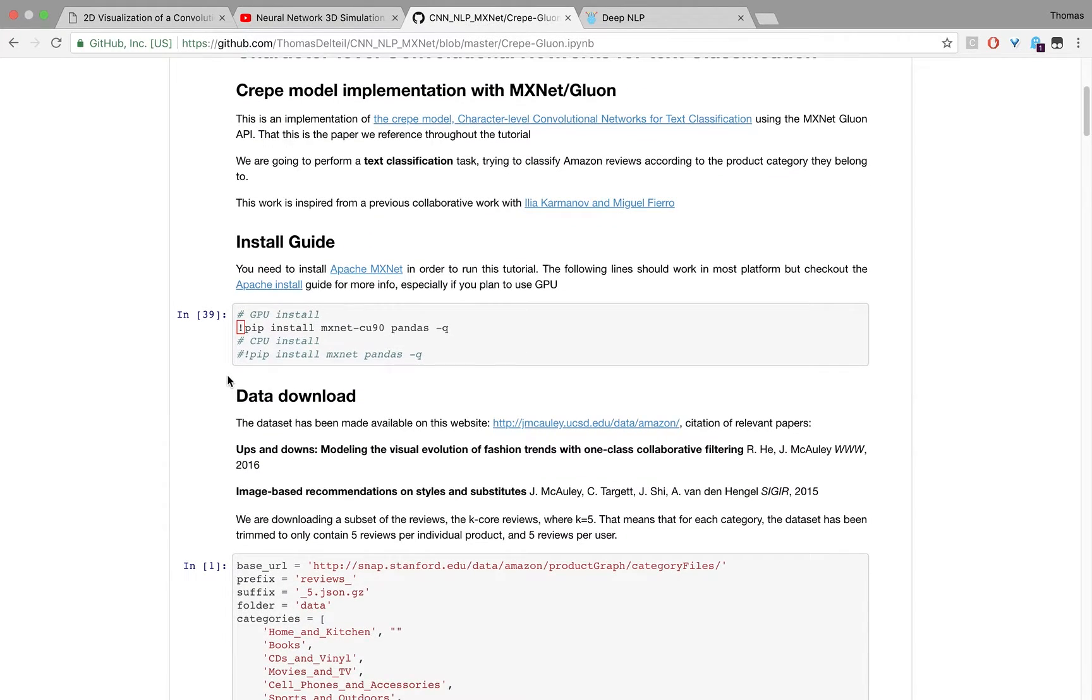First, we need to install MXNet. MXNet is a deep learning library with a very efficient implementation and asynchronous backend processing so that the GPU is utilized at its best.